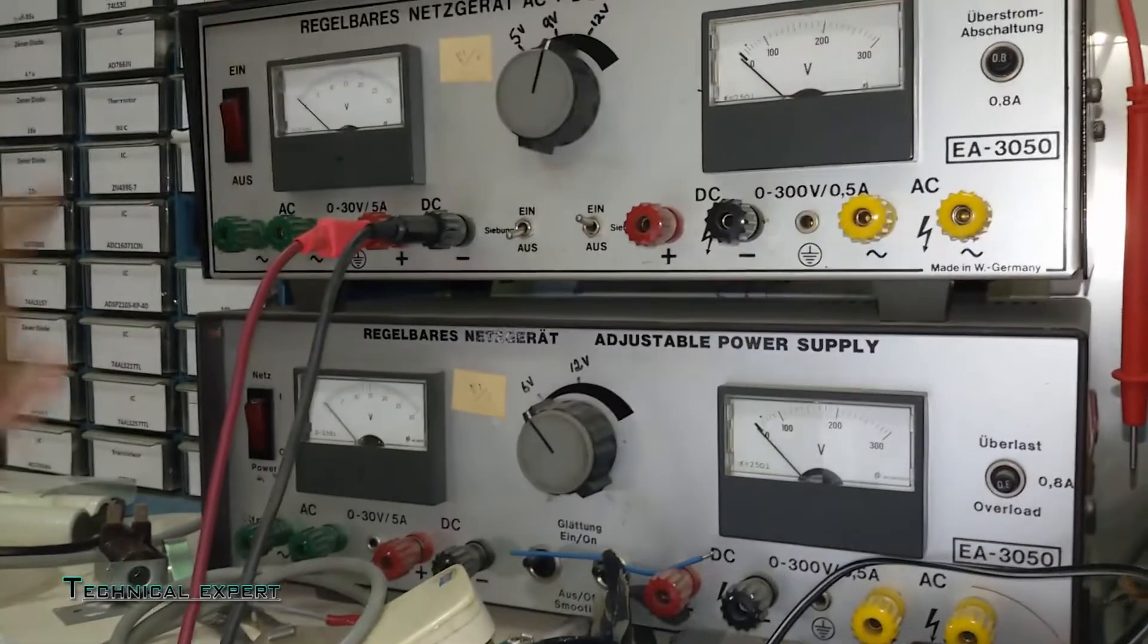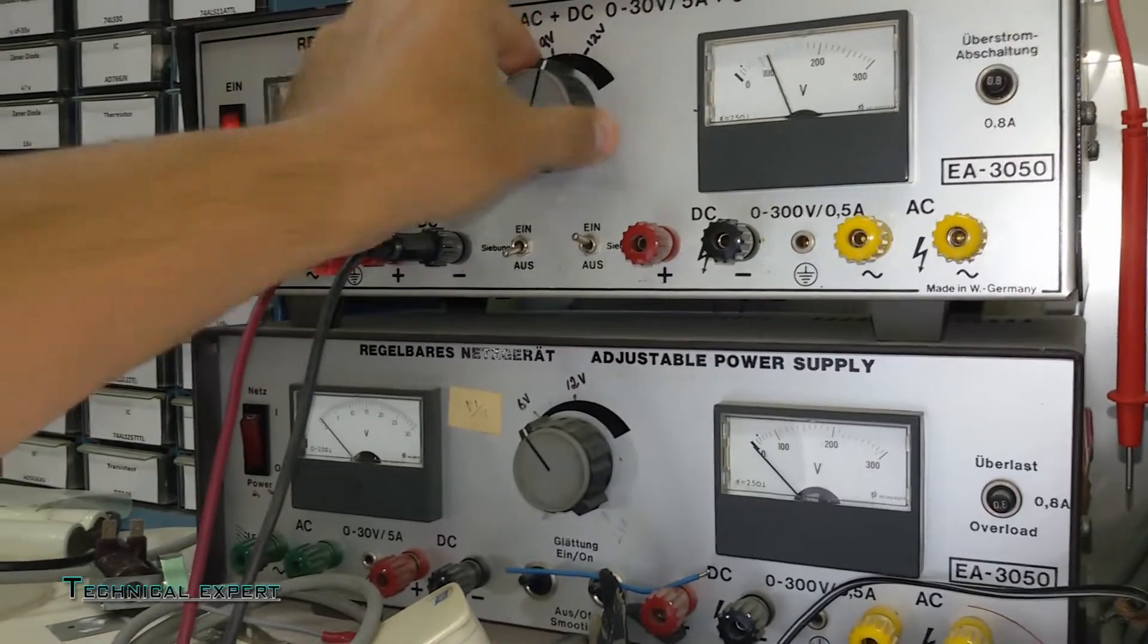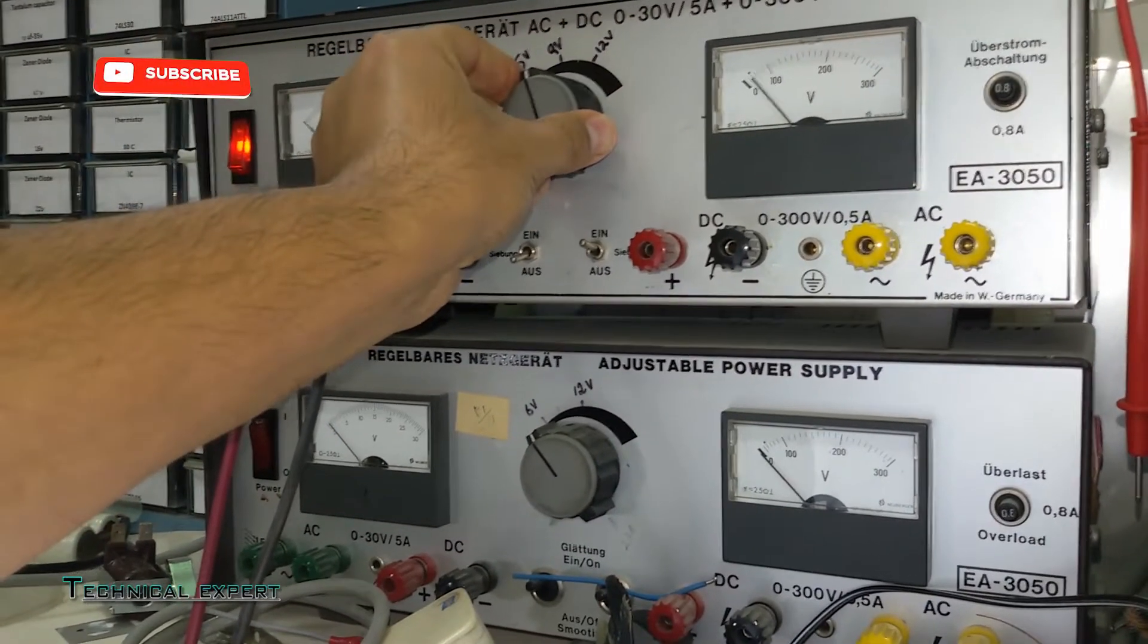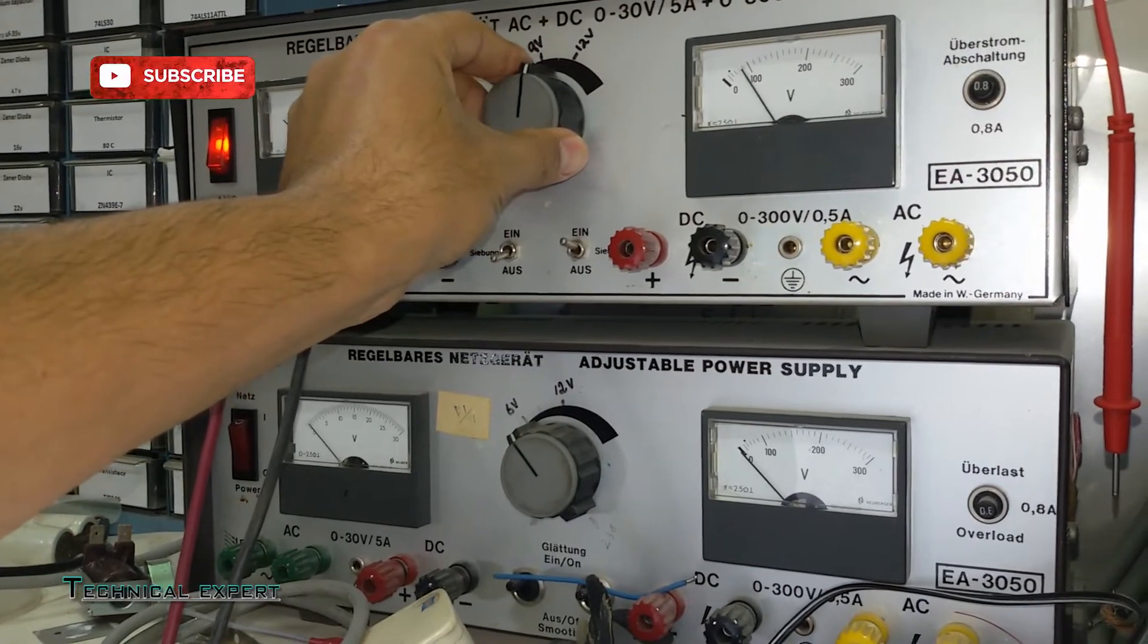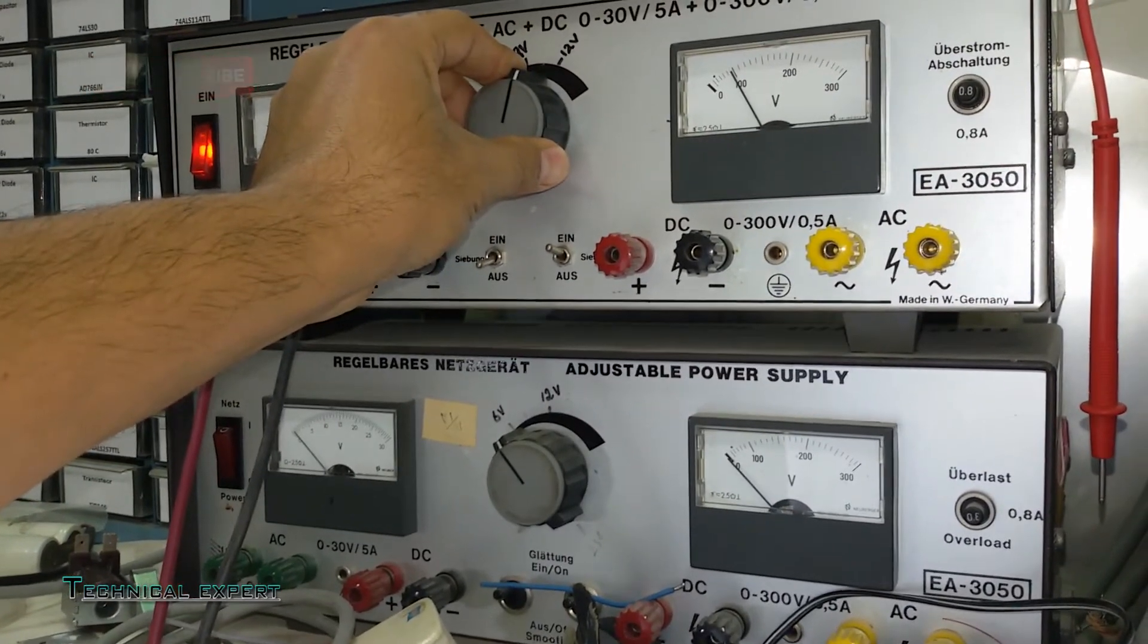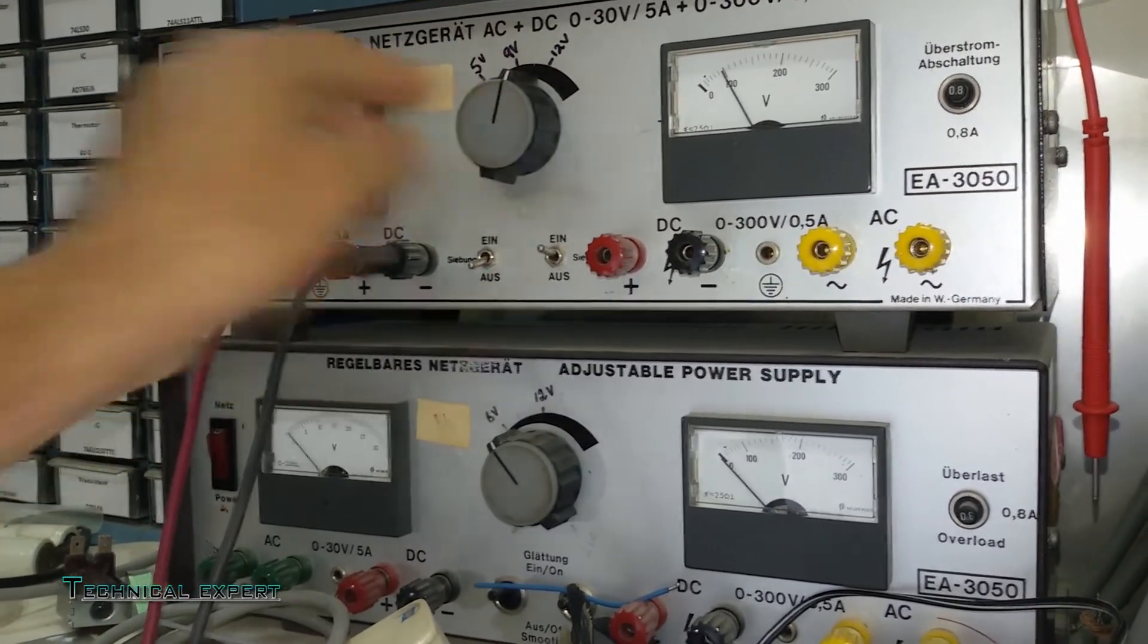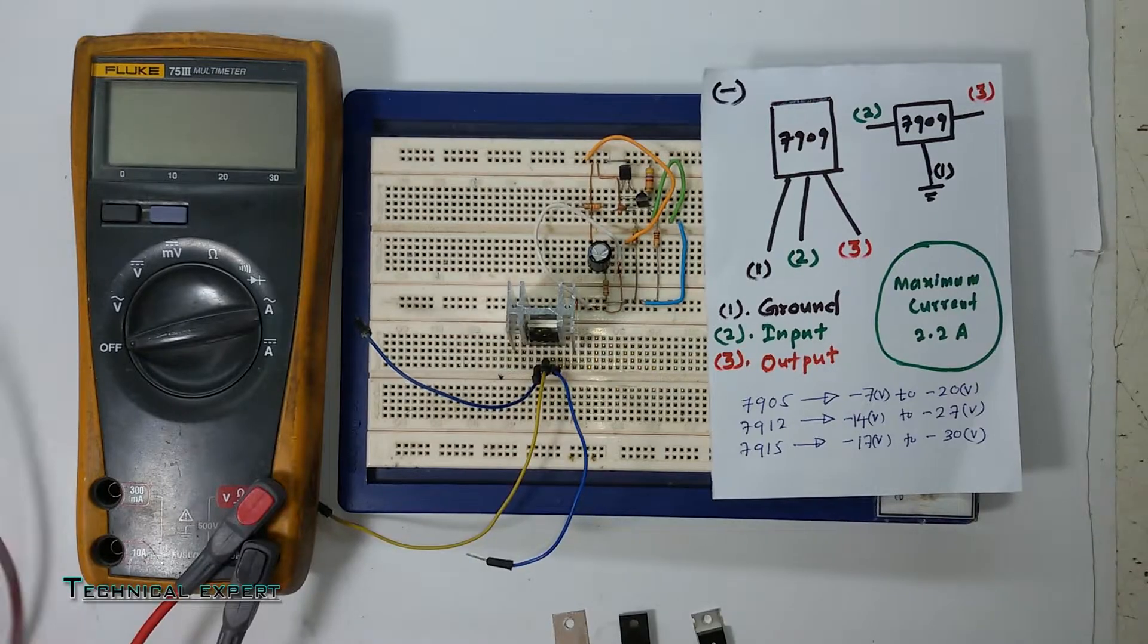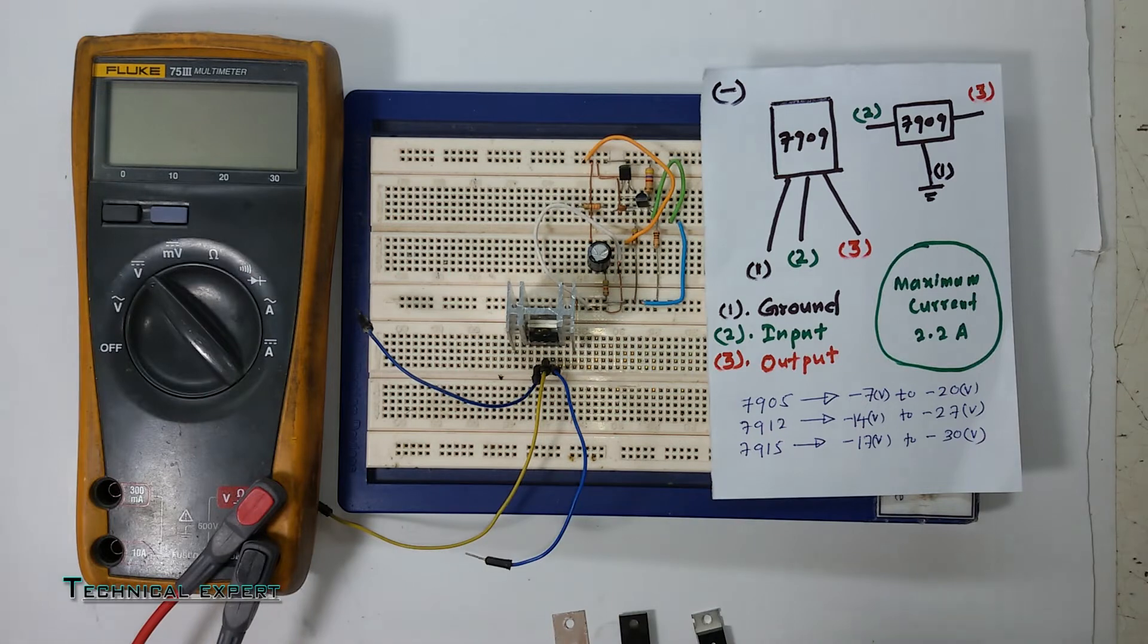We'll use a power supply—here we have 10 volts. This 10V DC we will apply to our regulator. We are giving supply to it, so you can see the meter.